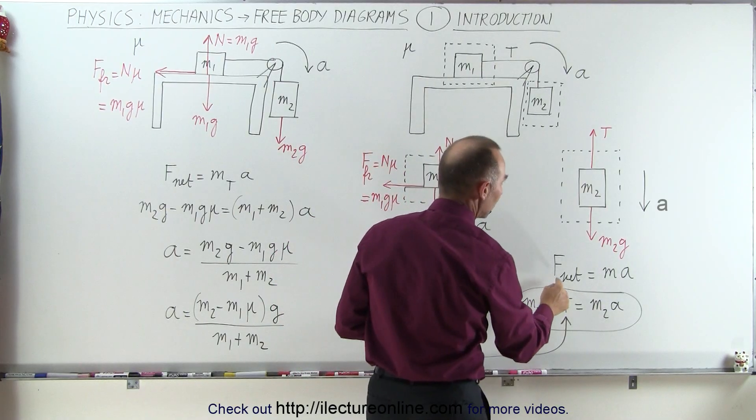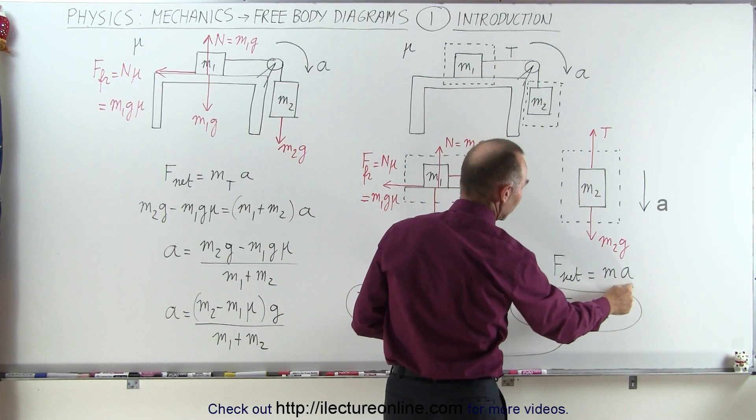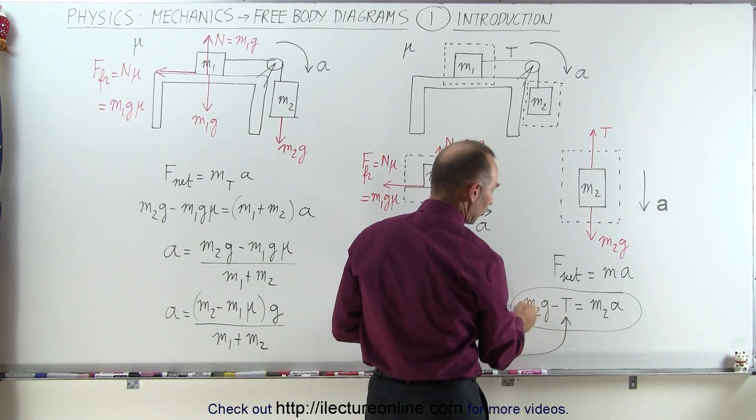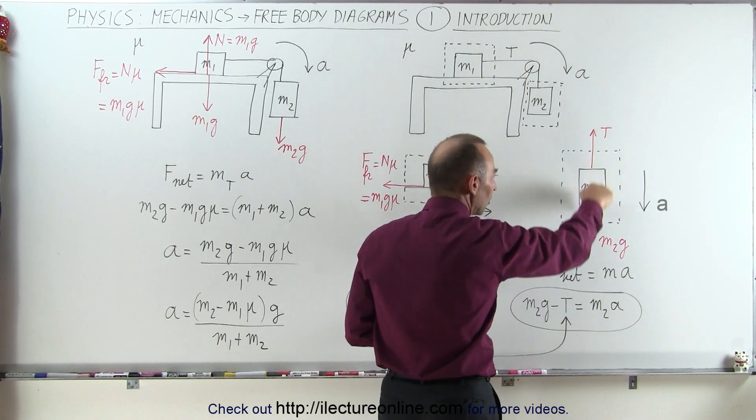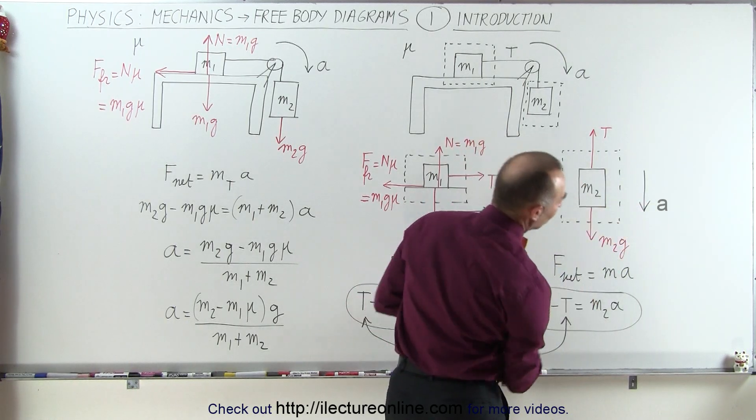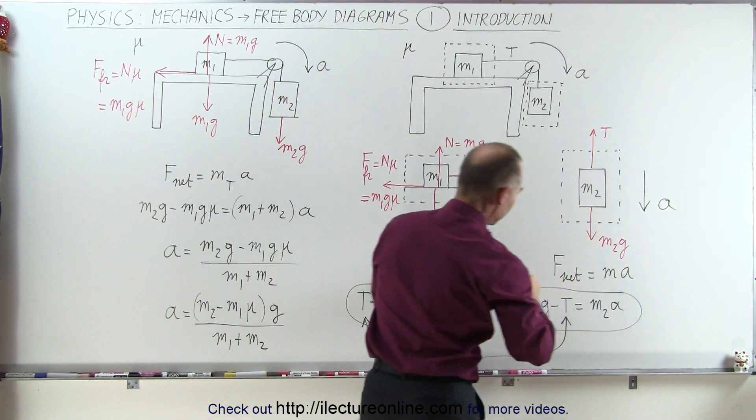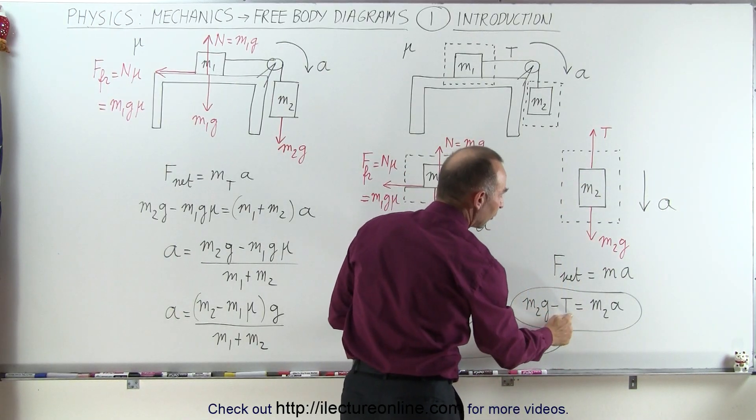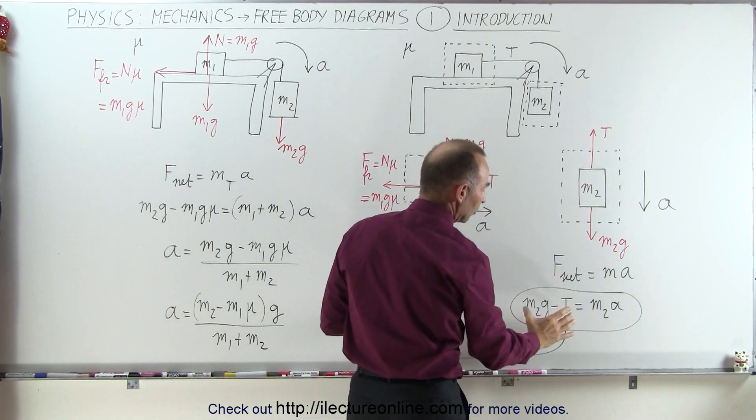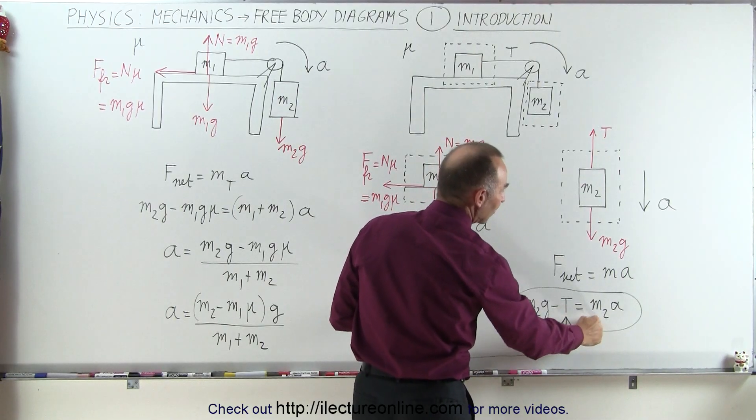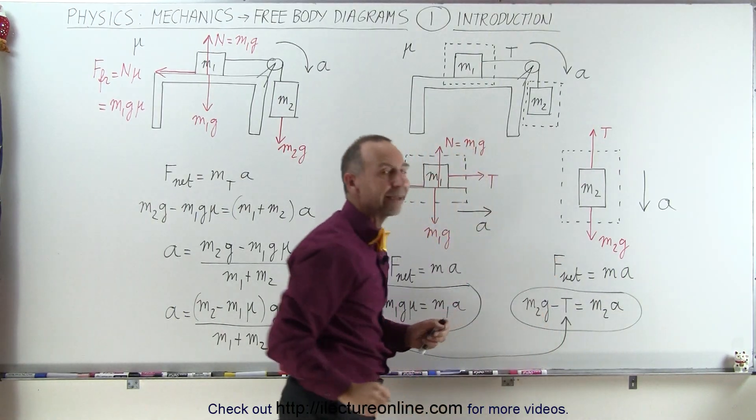Again we use the equation F net equals mass times acceleration. The net force is all the forces aiding the acceleration, the same direction as you assume the acceleration, and I guess I should put an a there, and minus all the forces opposing the acceleration. So the net force equals the mass m2 times its acceleration.